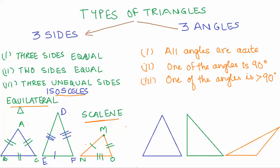For the first case, where all three angles are acute, it is known as an acute angled triangle. Let us say this triangle is EFG, and angles F, G, and E are all acute — less than 90 degrees — and therefore it is an acute angled triangle.